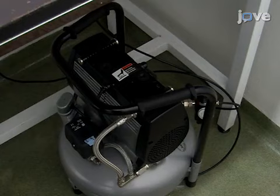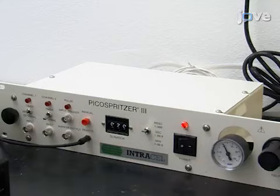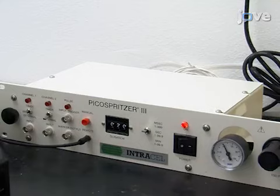To perform zebrafish injections of fluorescent dye, use a standard micro injection setup consisting of an air compressor connected to a pressure regulator system that feeds into a straight pipette holder for use with 1.0 outer diameter capillaries.